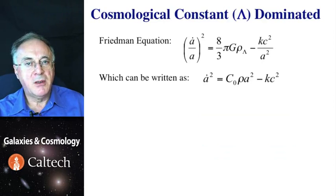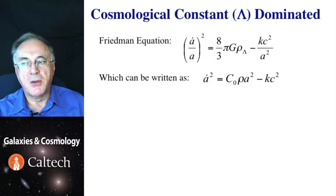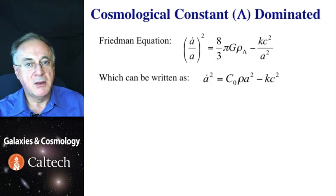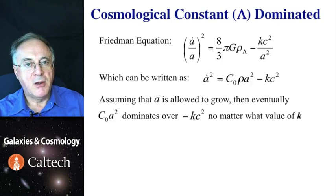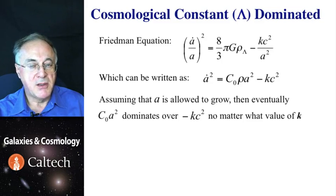Now, let's consider a model which only has dark energy in the form of a cosmological constant. Its Friedman equation is shown here, which we can rewrite in a fairly straightforward fashion. And so now, if we assume that scale factor is allowed to increase as long as needed, eventually the first term on the right hand side dominates the second term, regardless of the actual value of the curvature constant.